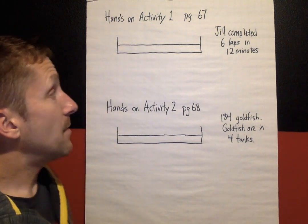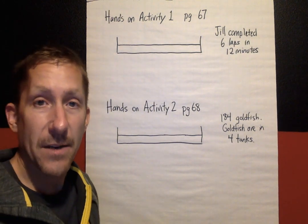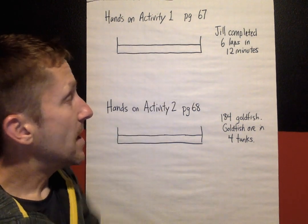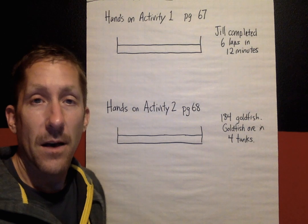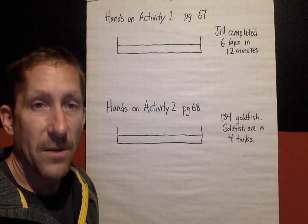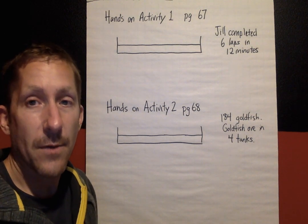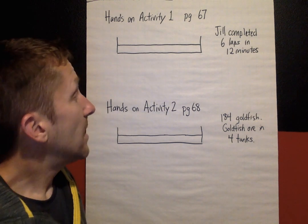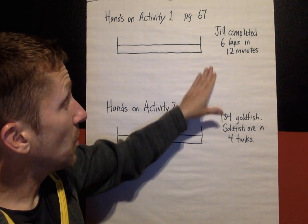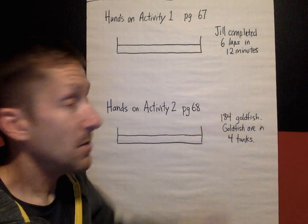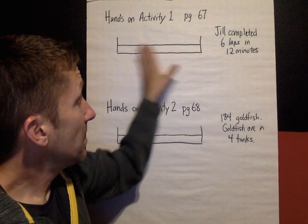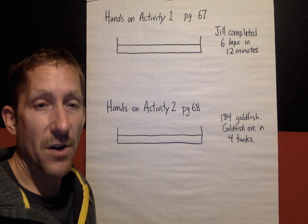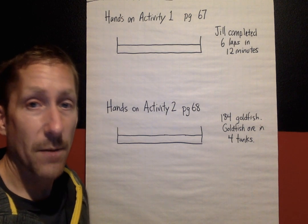For this lab, it's very similar to a lab we did before, where you've got a model, you've got a bar. I'm going to write that you need to do the same three things we worked on in a previous lab. That is: identify the totals of the ratio, the model, and also the equation — what equation are you using to solve the problem?